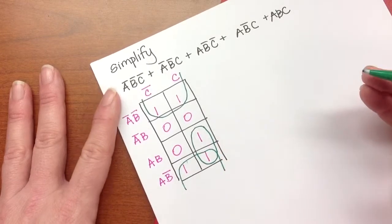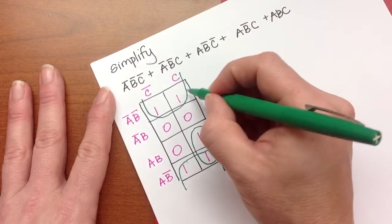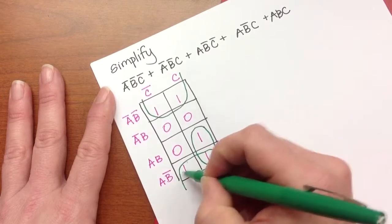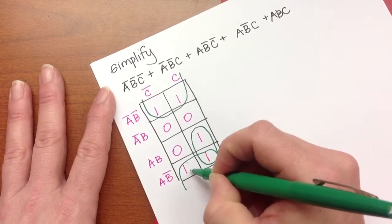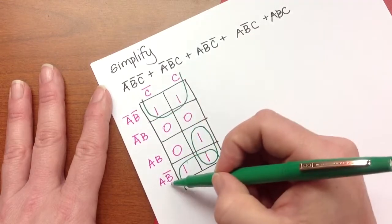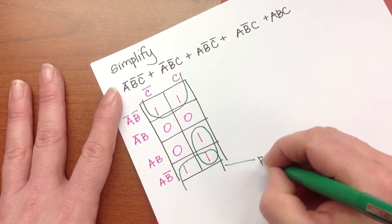So let's look at what the two simplifications are. This one would be, as I go across here, C changes from not C to C. And then from this line to this line, A changed. I have not A here, I have A here. So that term gives me not B.